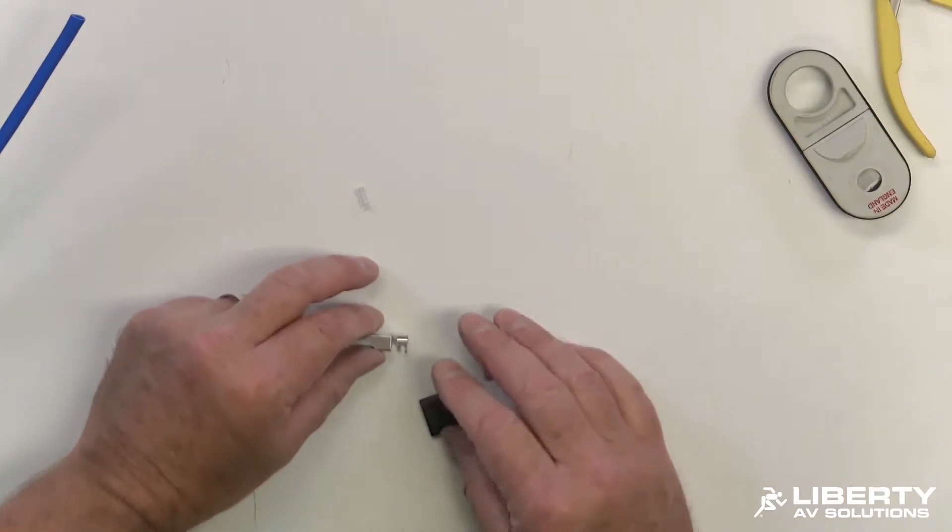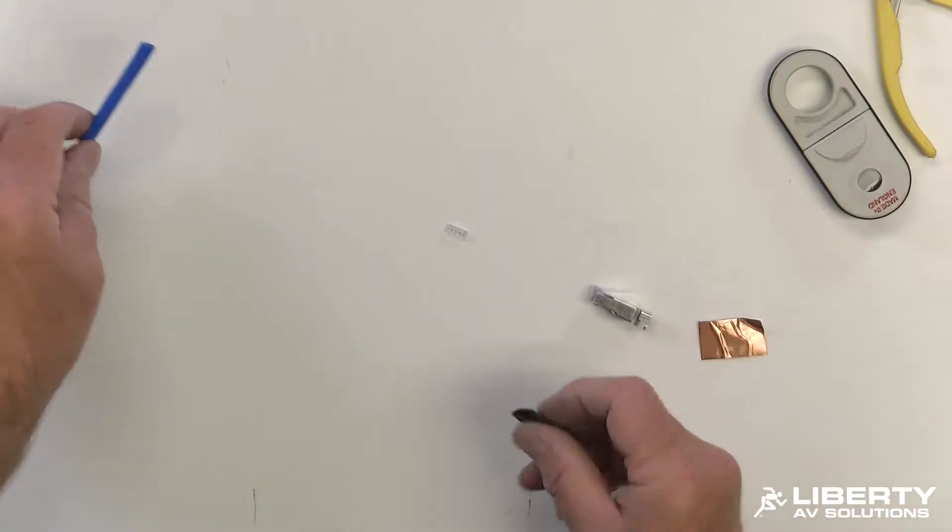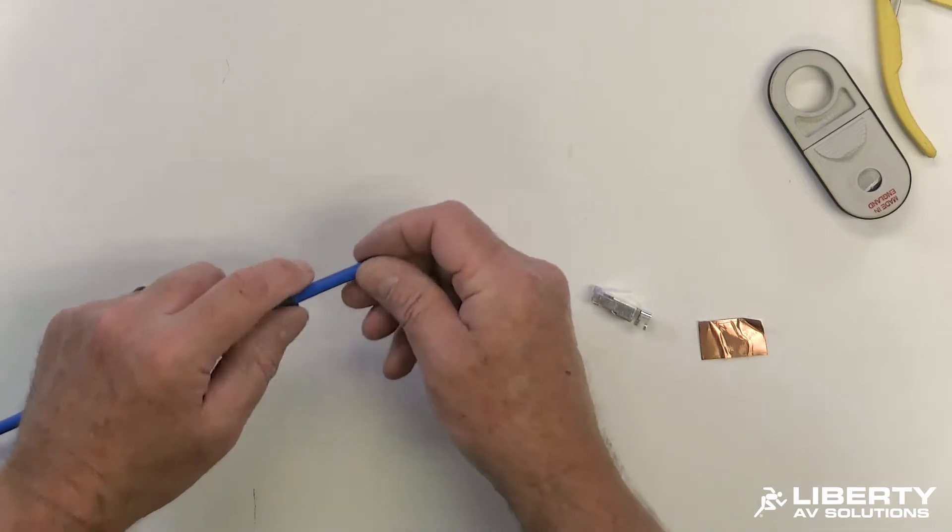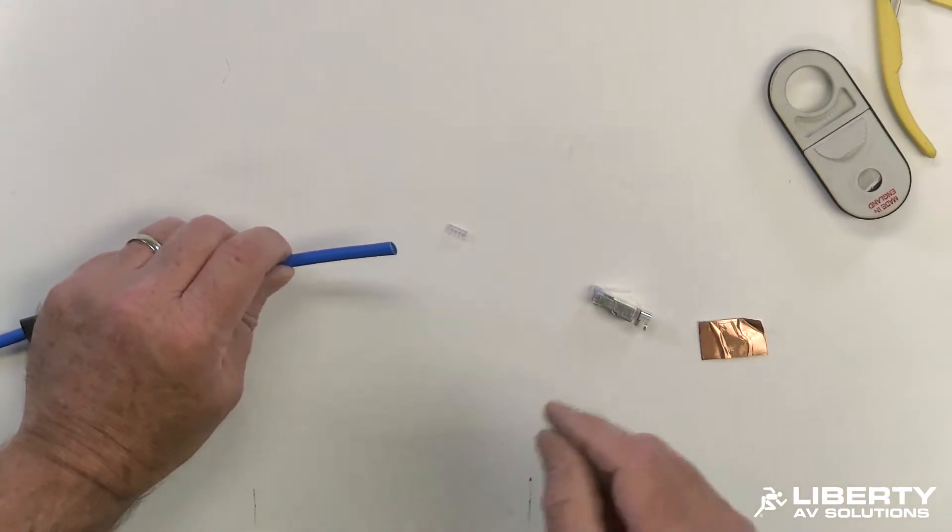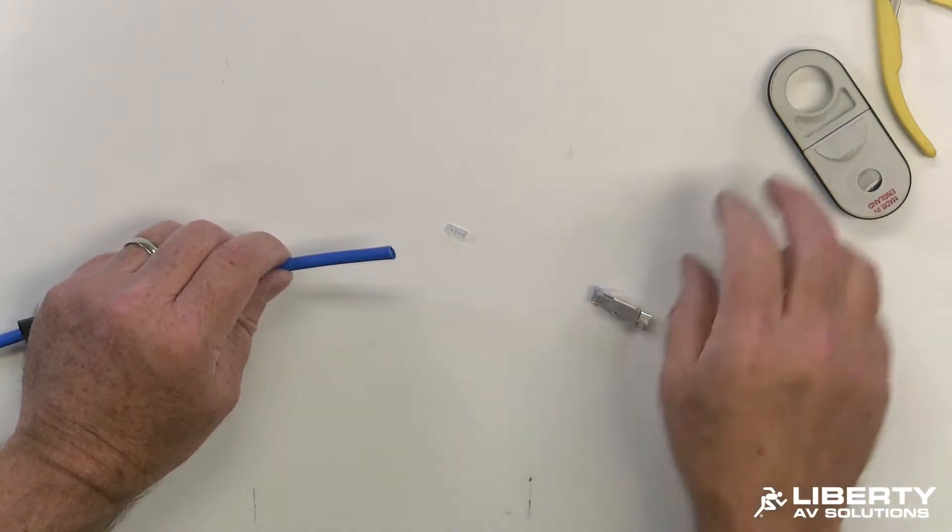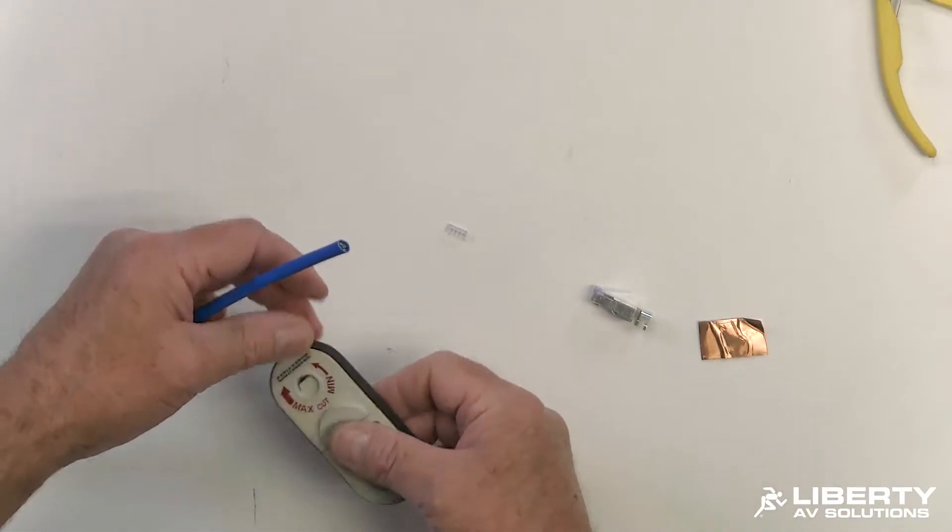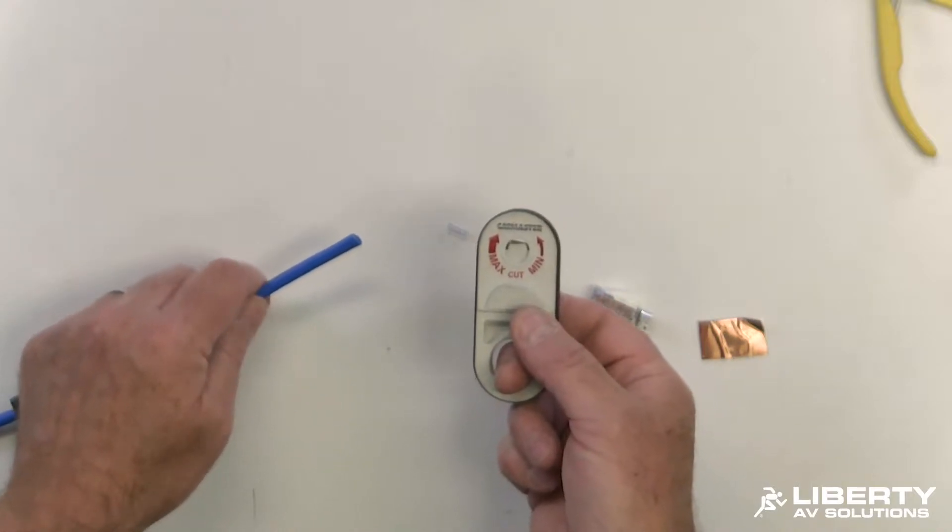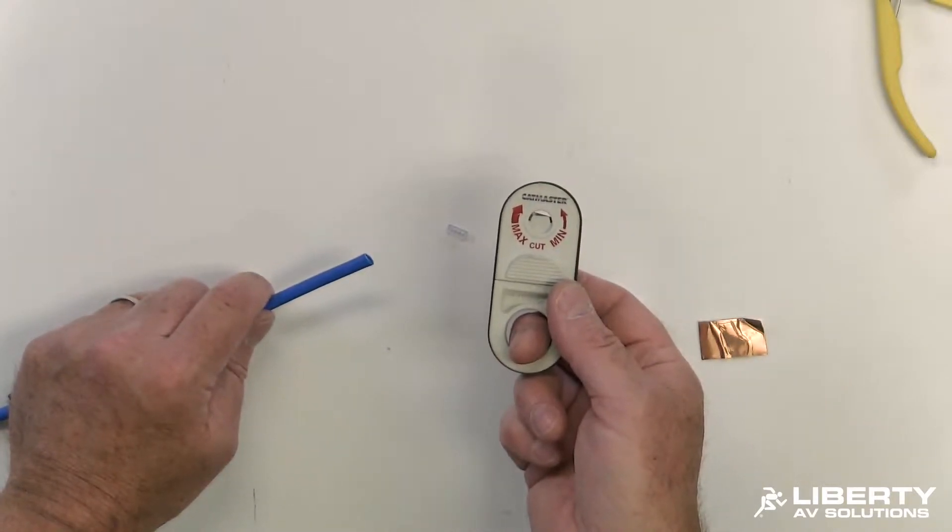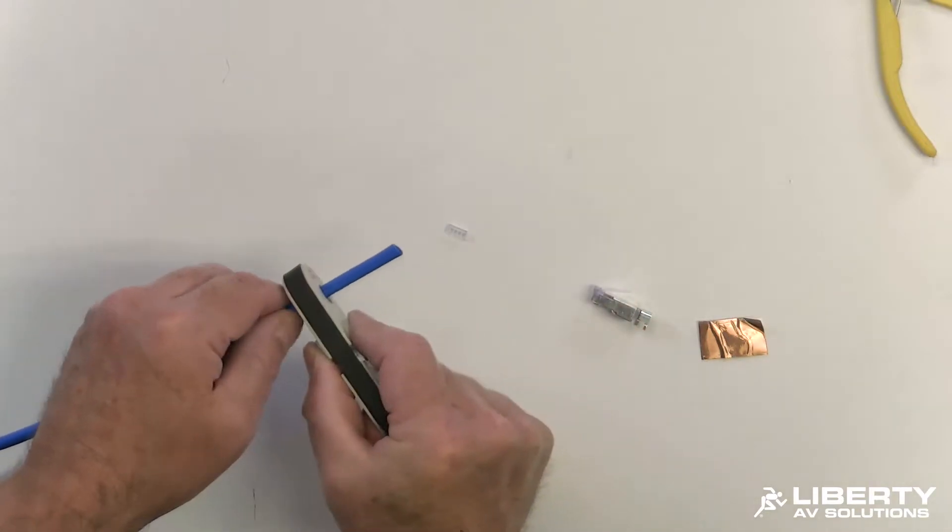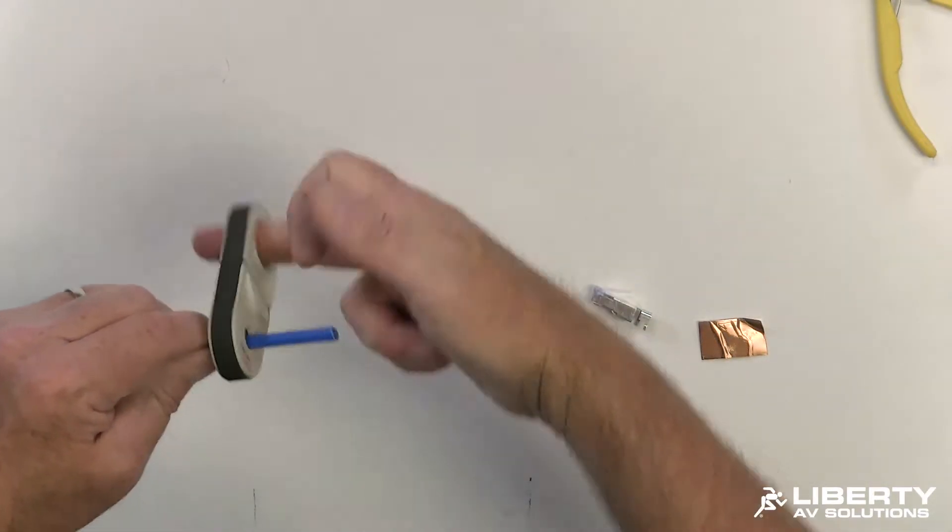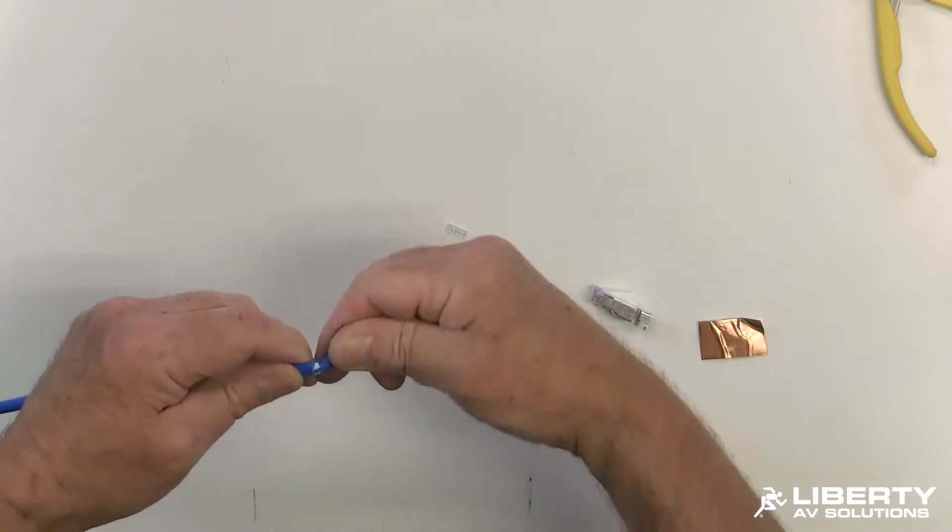So first step is going to be slide the shrink tubing up the cable, kind of like a boot on a BNC connector. You don't want to forget that because you can slip it over the RJ45 if you forget. We're going to strip off the jacket about roughly 2 inches, 1.5 to 2 inches. I'm going to do this using the minimum spin on a cigar cutter stripper. I'm going to locate it, give it a couple spins around, and then pop my jacket off.